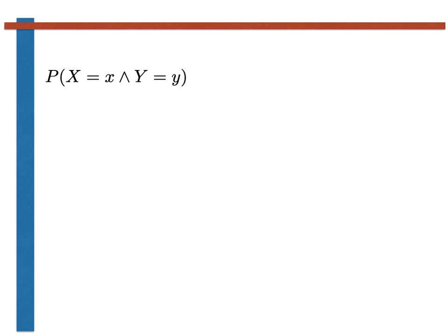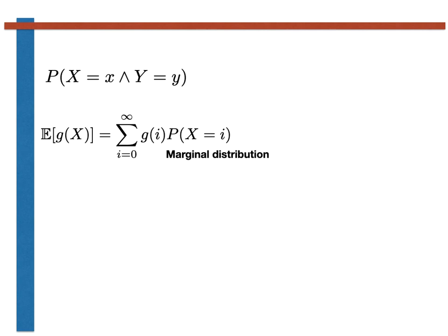Elsewhere in this course we have learned about computing expectations. It shouldn't surprise you that we can still calculate expectations of a function of a discrete random variable when given the joint probability mass function, using the expression shown here. The only difference is that we need to calculate the marginal distribution from the joint distribution before using this familiar expression.